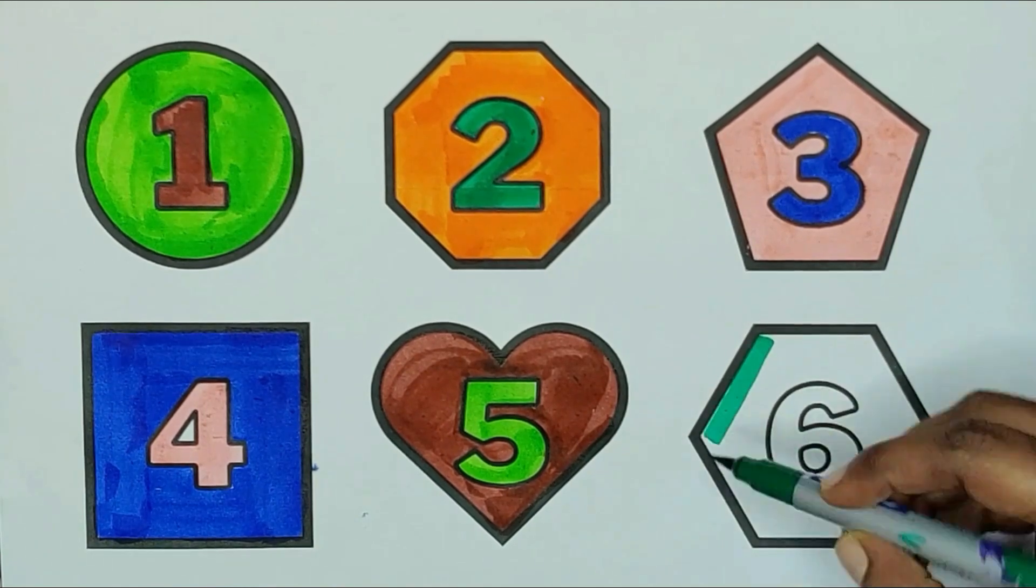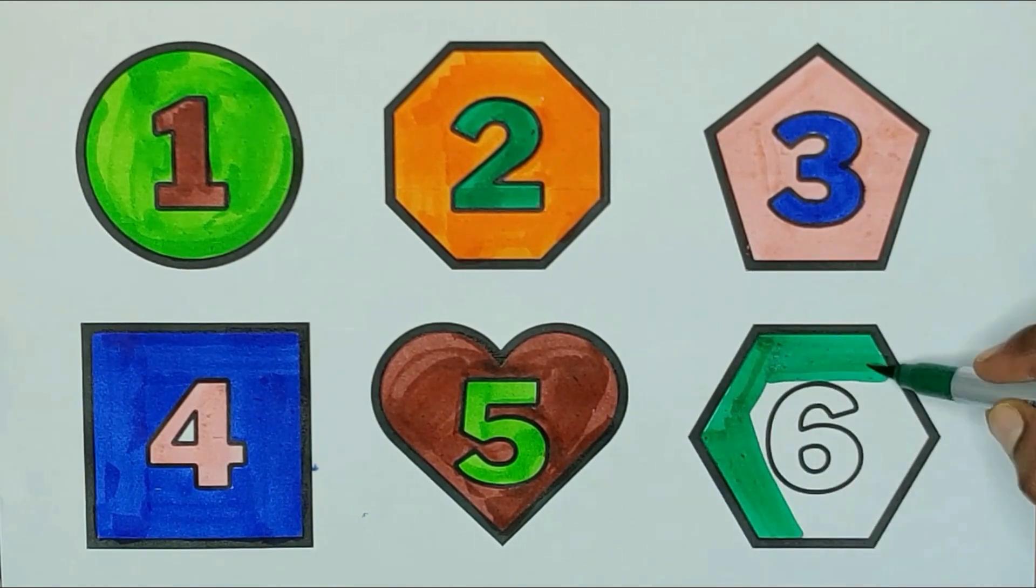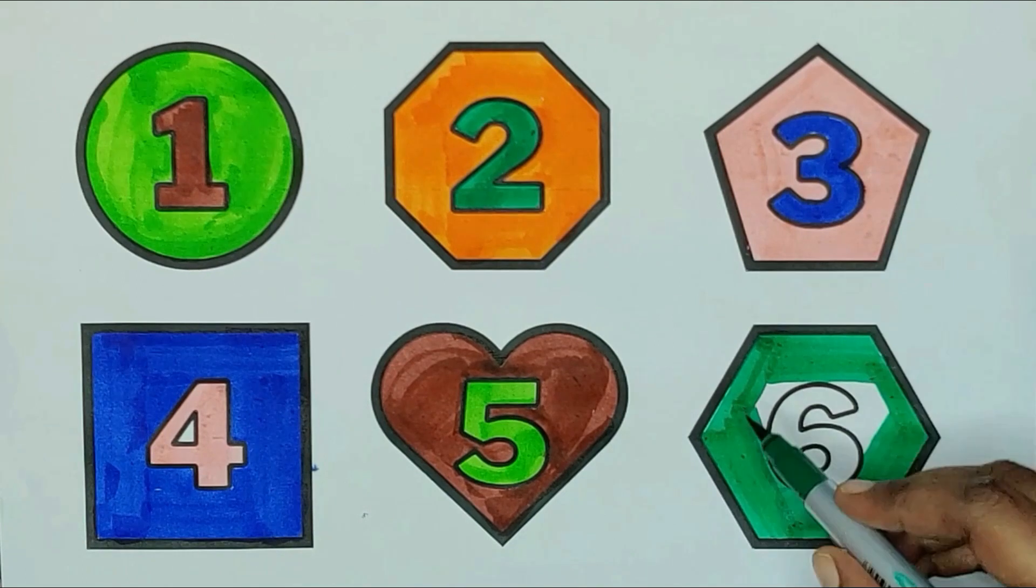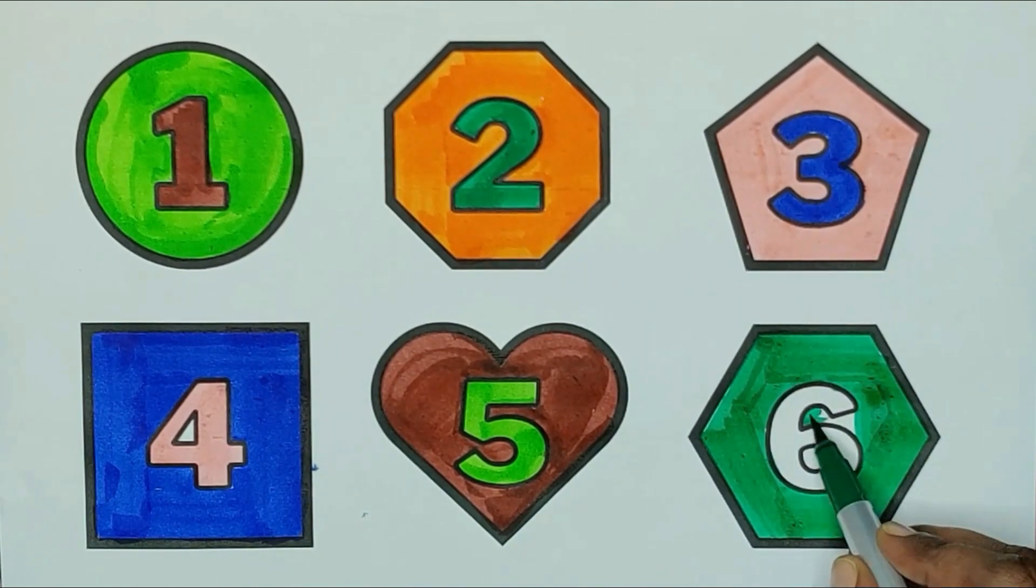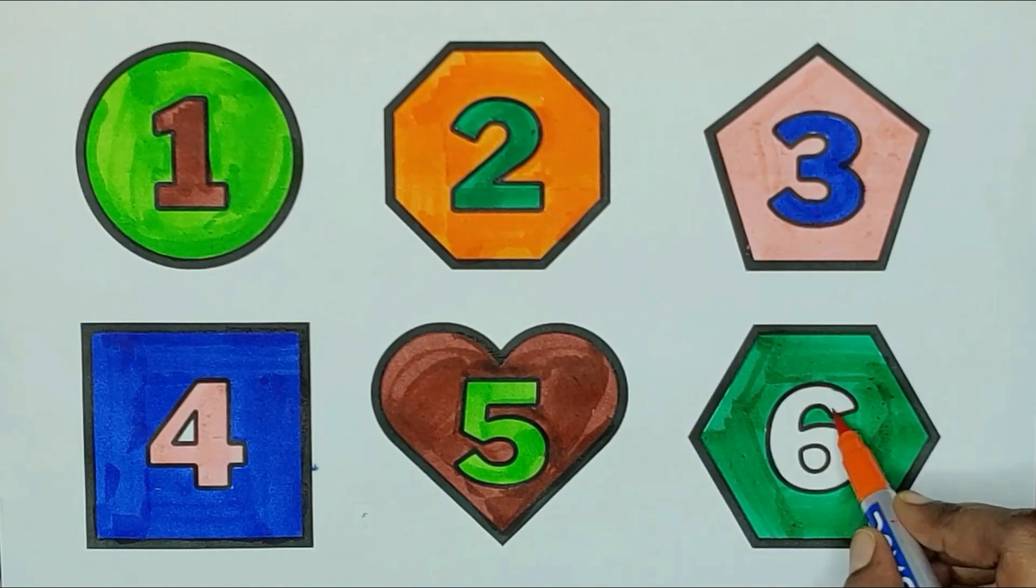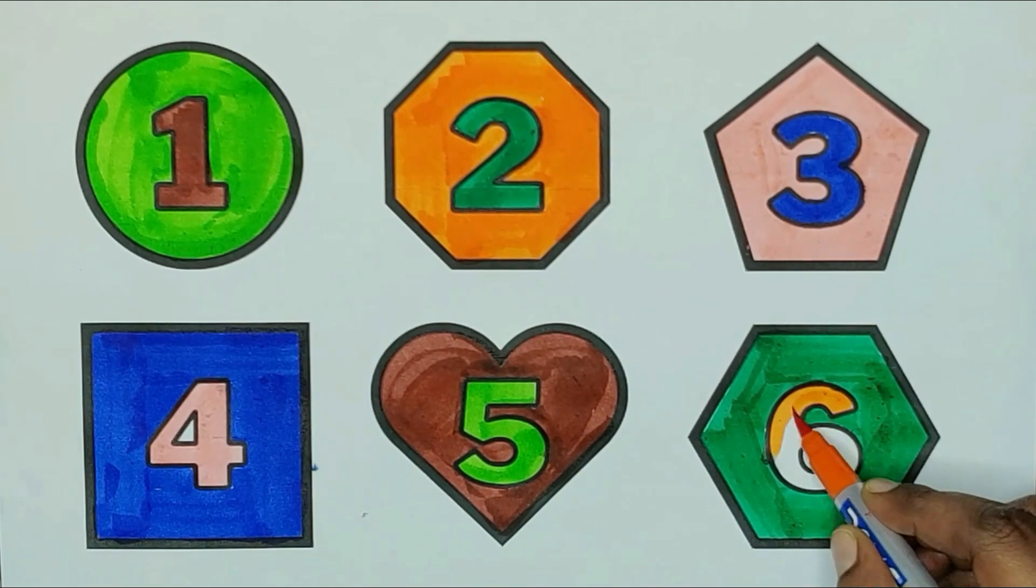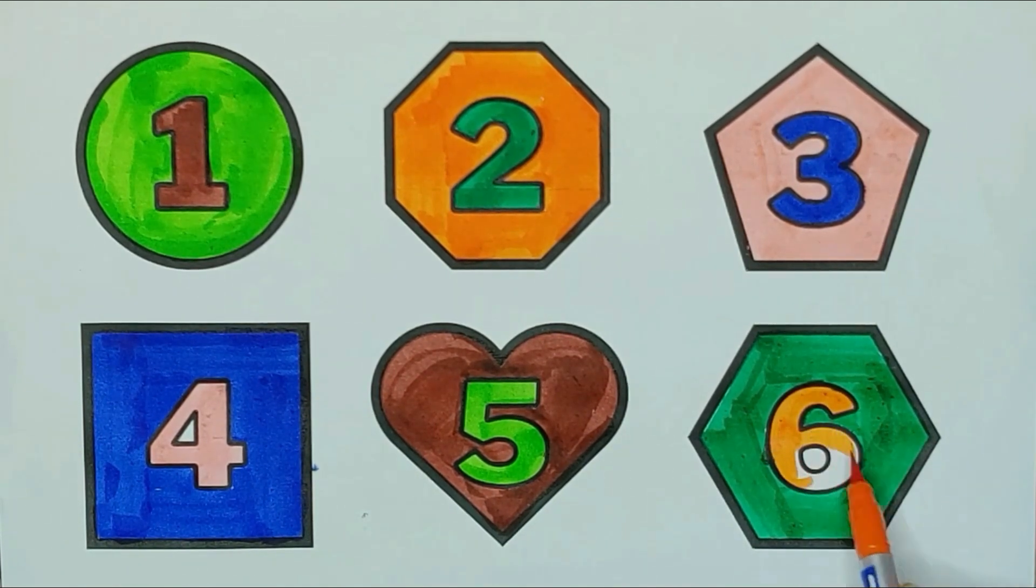Green color hexagon. The shape is hexagon. Orange color, six. S, I, X, six.